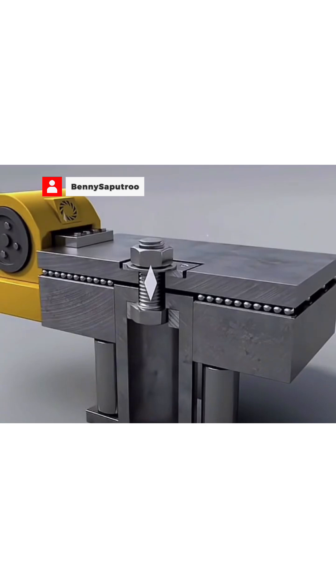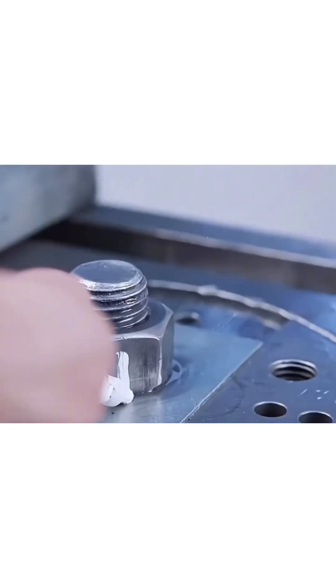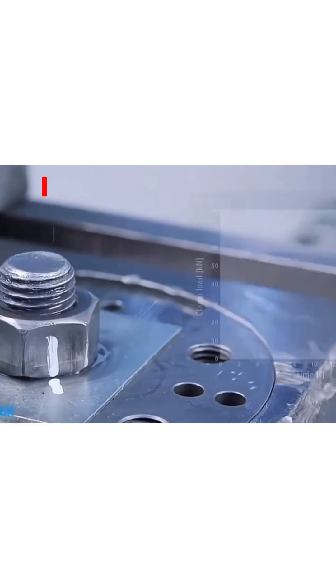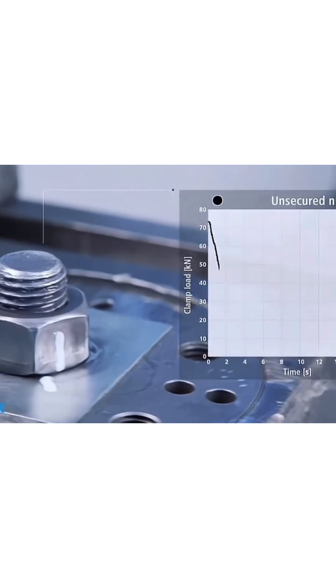The answer lies in the Junker test, the most brutal vibration test that shows how quickly a nut loses tension.